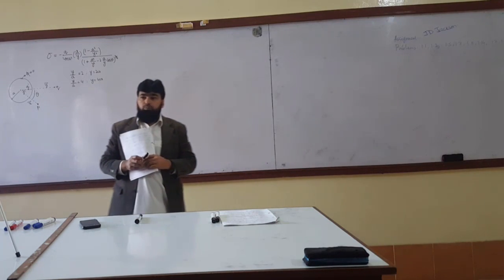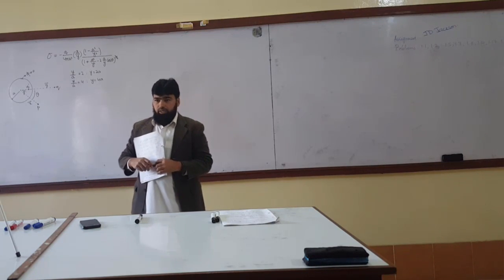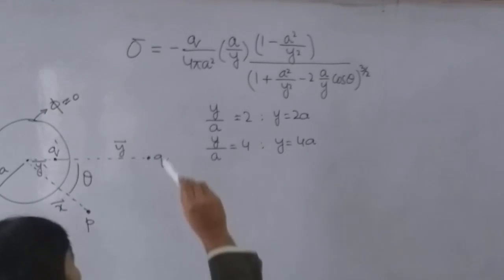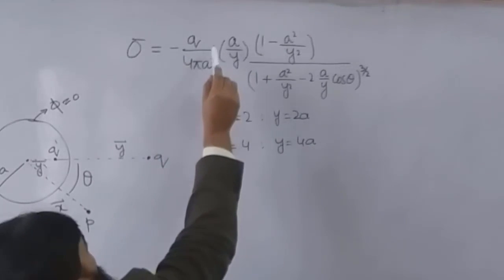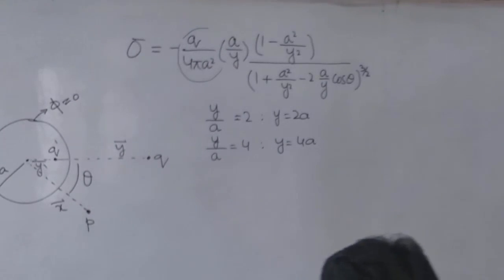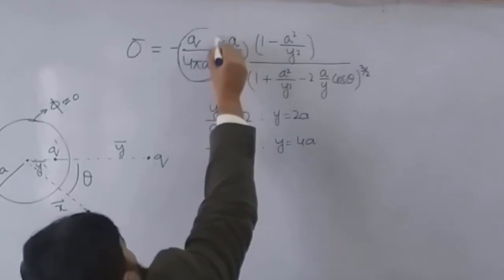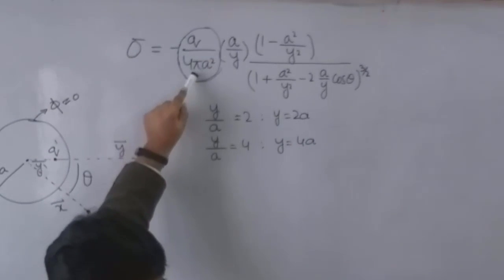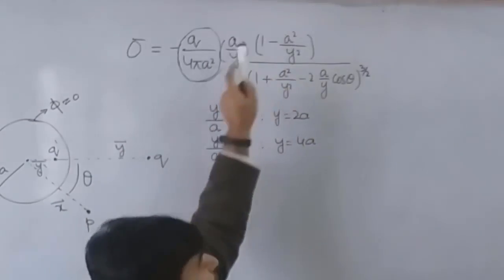Now how to plot because it's not a simple equation like y equals mx or y equals x squared. It's a difficult equation so I will have to think on this. You know that sigma is equal to q by 4πa², so it means this portion is sigma. Because this is charge per unit area, sigma is charge per unit area.